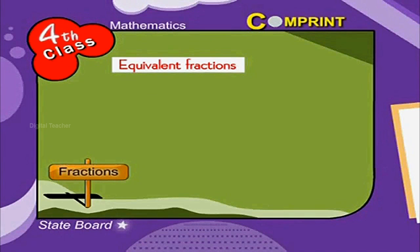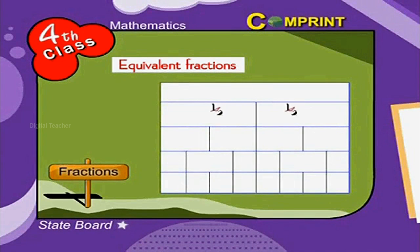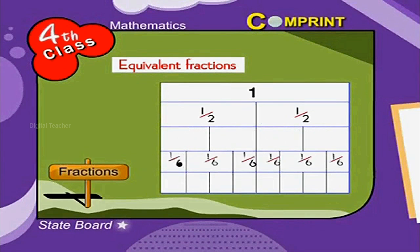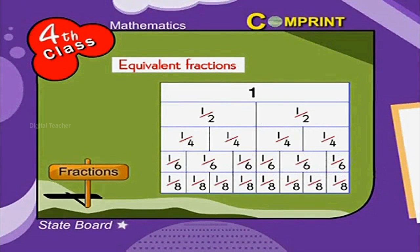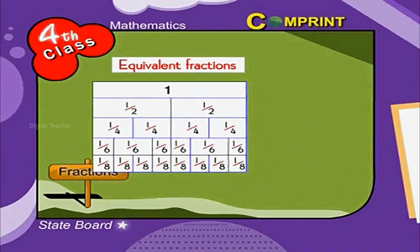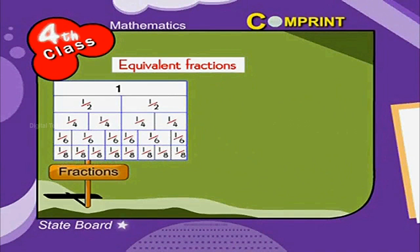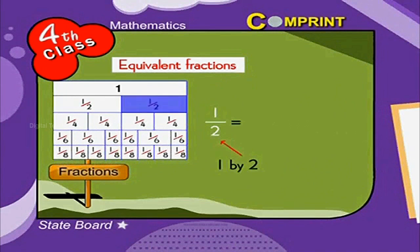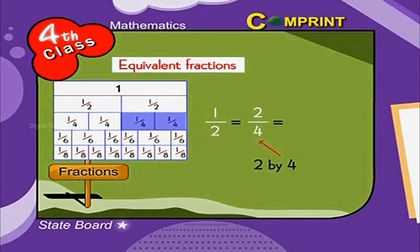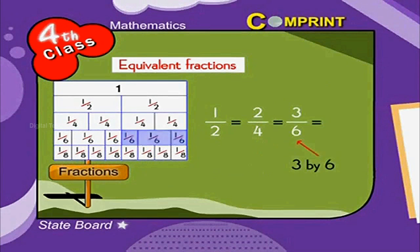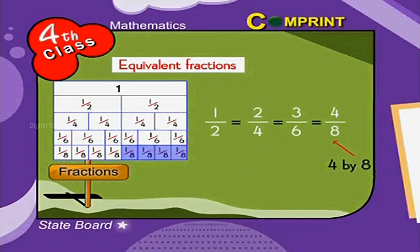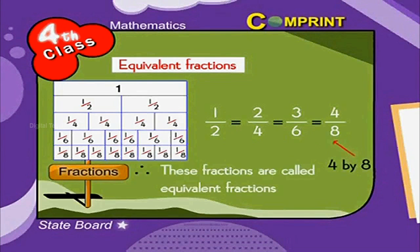Equivalent fractions — look at the picture. From the given picture, we can say that 1 by 2 is equal to 2 by 4. At the same time, it is equal to 3 by 6 as well as 4 by 8. Therefore, these fractions are called equivalent fractions.